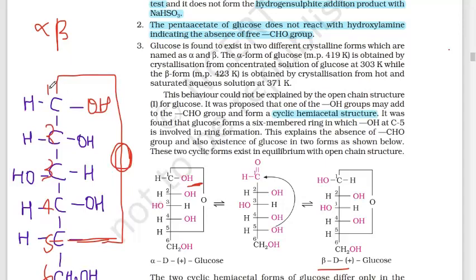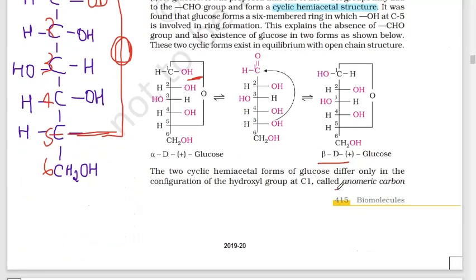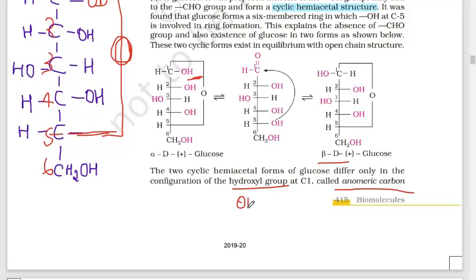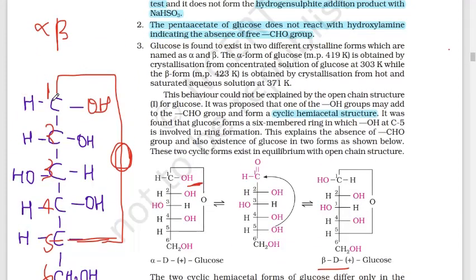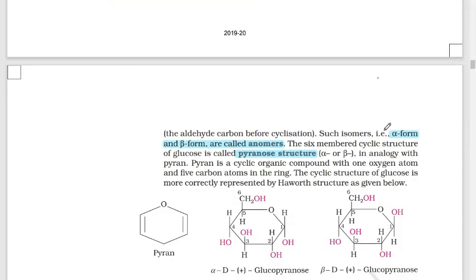Due to carbon number one, there is a possibility of two isomers. What do we call these two isomers? Anomers. The two cyclic hemiacetal forms of glucose differ only in the configuration of the hydroxyl group at carbon number one — alpha form and beta form. These are called anomers.